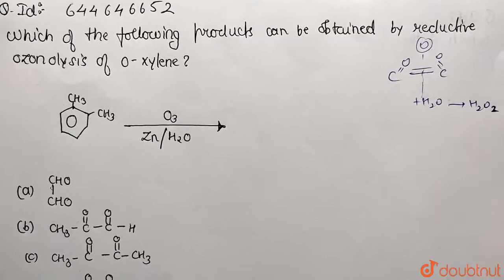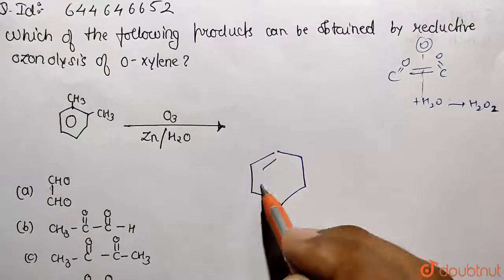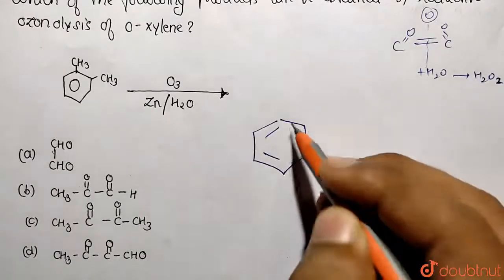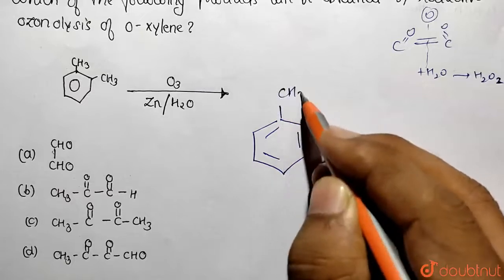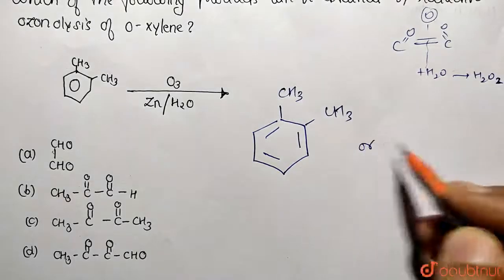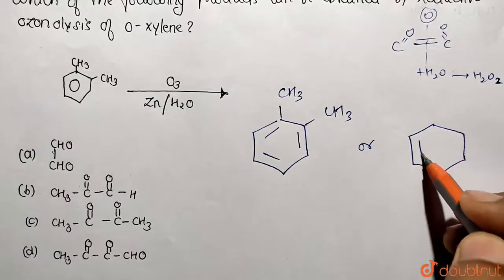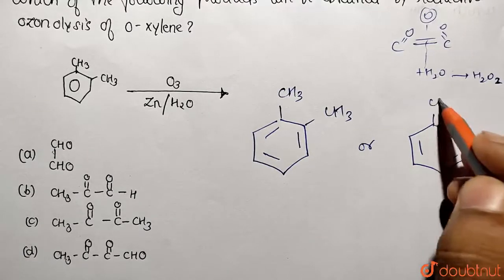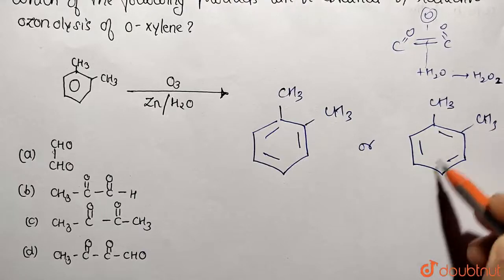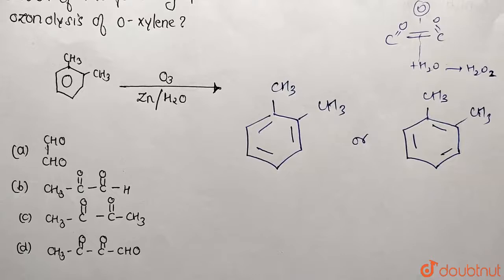Now let's apply this basic principle to the given molecule. The molecule has double bonds on these sides, and it can be represented with CH₃ groups. Because of delocalization of electrons, we also have another resonance structure for the same molecule. Now we need to perform cleavage of the double bonds.